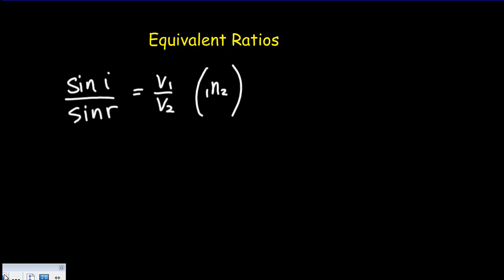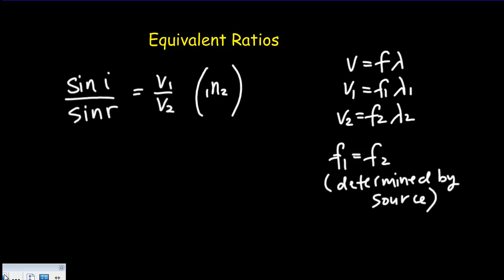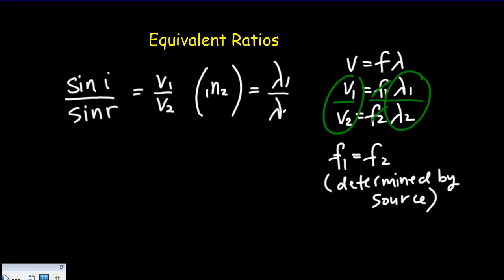We also know from the universal wave equation that V = f × λ. In the first medium, V1 = f1 × λ1, and in the second medium, V2 = f2 × λ2. But f1 equals f2 because both are determined by the source — they're the same frequency. So when we divide, the frequencies cancel, and the ratio V1/V2 equals λ1/λ2. Therefore, we can also say that sine i / sine r equals λ1 / λ2.